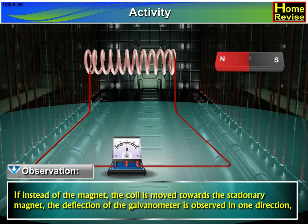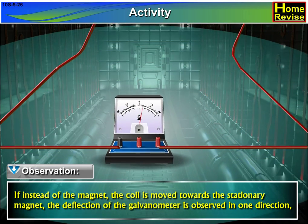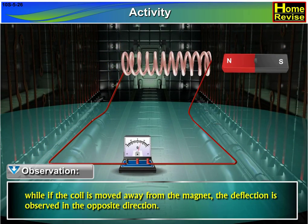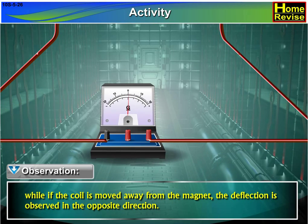If instead of the magnet, the coil is moved towards the stationary magnet, the deflection of the galvanometer is observed in one direction, while if the coil is moved away from the magnet, the deflection is observed in the opposite direction.